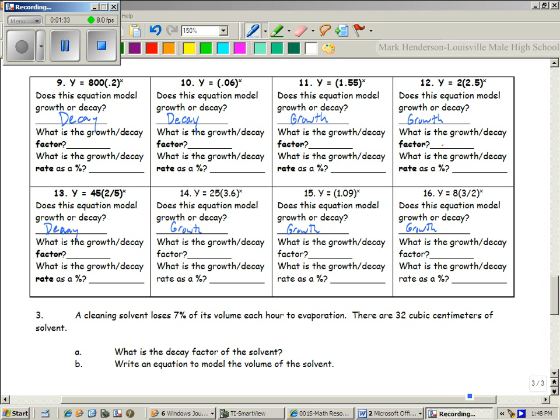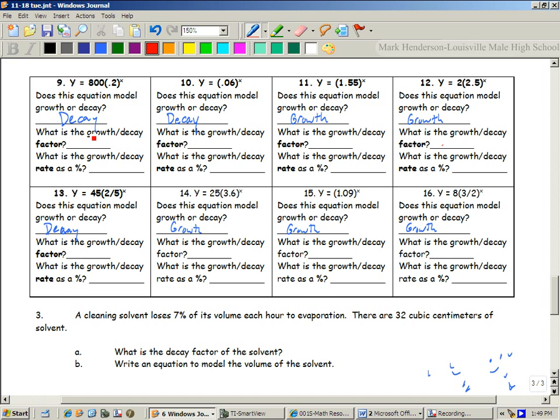The number in parentheses is the growth factor. Hang on just a second. So, now that we have the microphone better, the growth or decay factor is actually the number in parentheses, like we just said. So this is 0.2. What do you think it is as a rate?